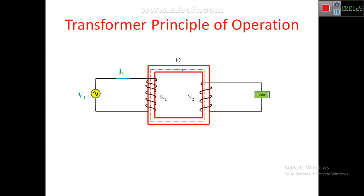This mutual flux is flowing in the transformer core, and here the secondary winding is also wound on the same transformer core, so it will also take the advantage of this flux.